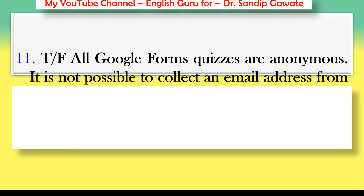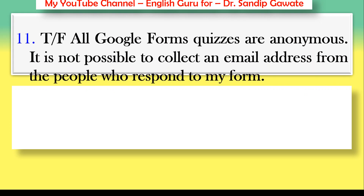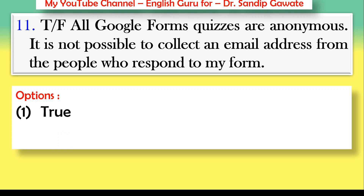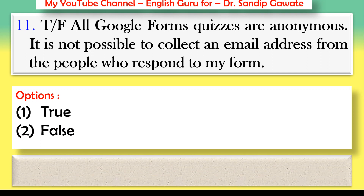Question 11 — true or false: All Google Forms quizzes are anonymous; it is not possible to collect an email address from the people who respond to my form. The correct answer is false — you can collect email addresses of the participants; it cannot be anonymous.